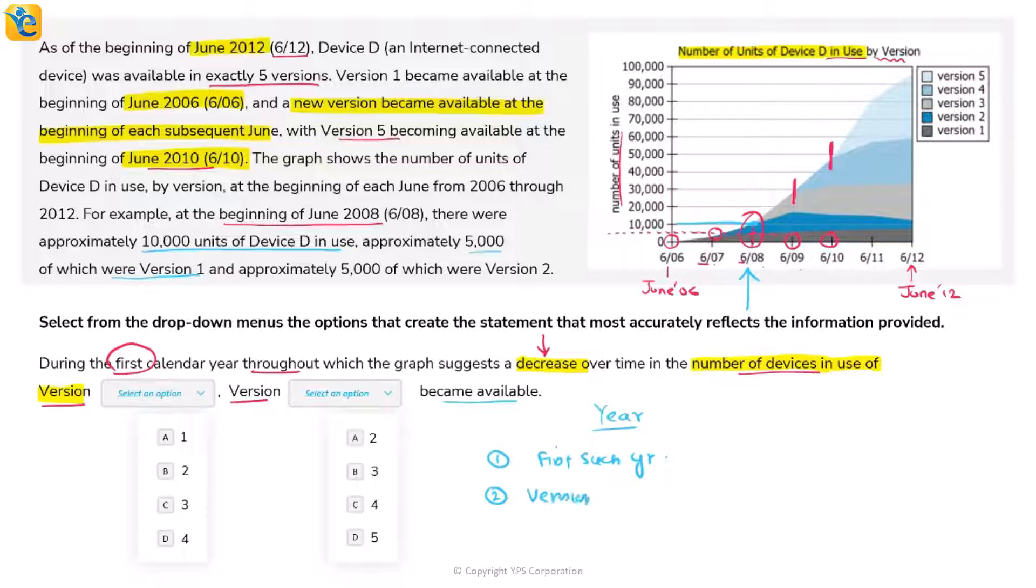During this particular year, Version [blank] became available with another set of choices. We need to find the first year where Version X decreased and Version Y became available—both happening in the same year.